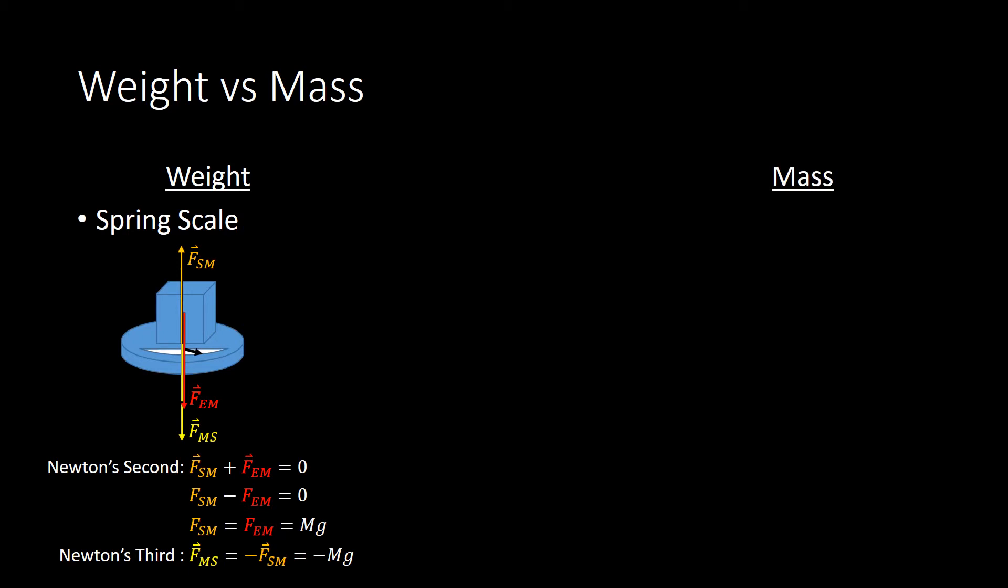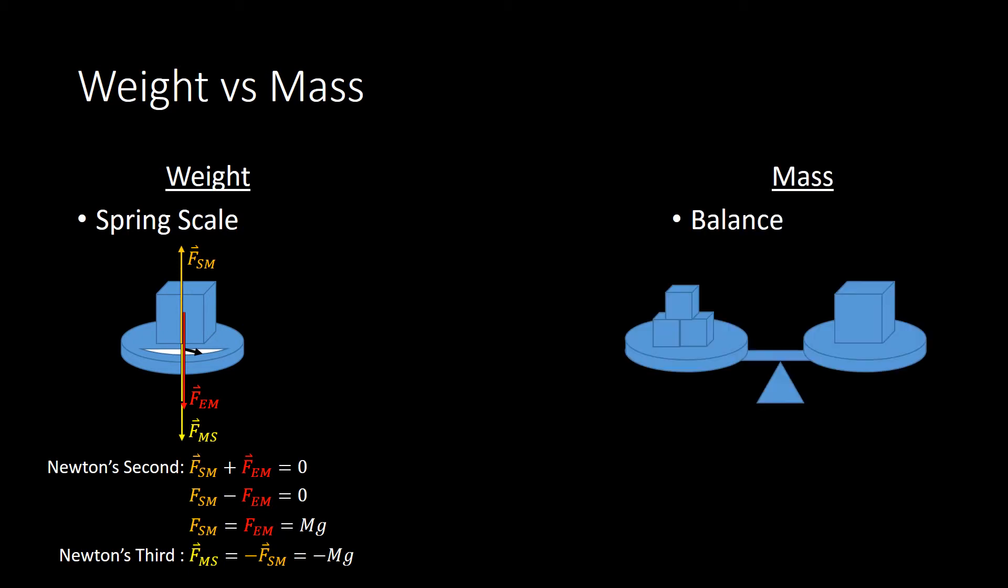The way to do that is to use something like this, which is a pan balance. The pan balance is two different pans attached to a bar that pivot on this little triangular support in the diagram. The way it works is you place your unknown mass, the capital M, onto one pan, and you stack a bunch of known masses onto the other pan and try to get them to balance.